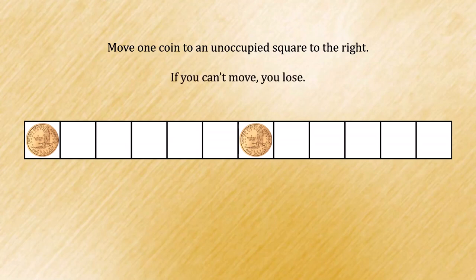Play will continue like this until a player can't move. In other words, the coins are all the way on the right. If you can't move, then you lose, and the other player, the person who made the final move, wins the game.